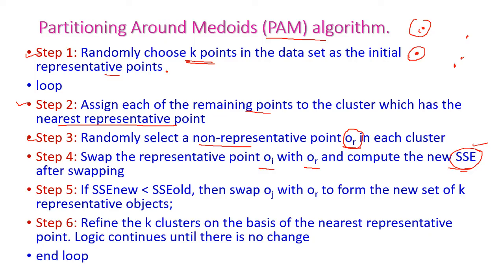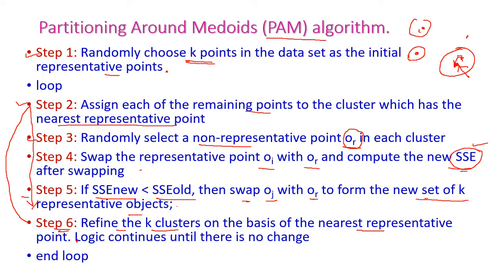The new SSE is the sum of squared error computed after swapping. We determine which point — between the current medoid and the candidate — gives the lower SSE, and that becomes the representative point. If the new SSE is less than the old SSE, then swap OI with OR. Step five: form the new set of k representative points. Step six: refine the k clusters based on the nearest representative point. Steps 2 through 6 repeat until there is no swapping of representative points in any cluster.